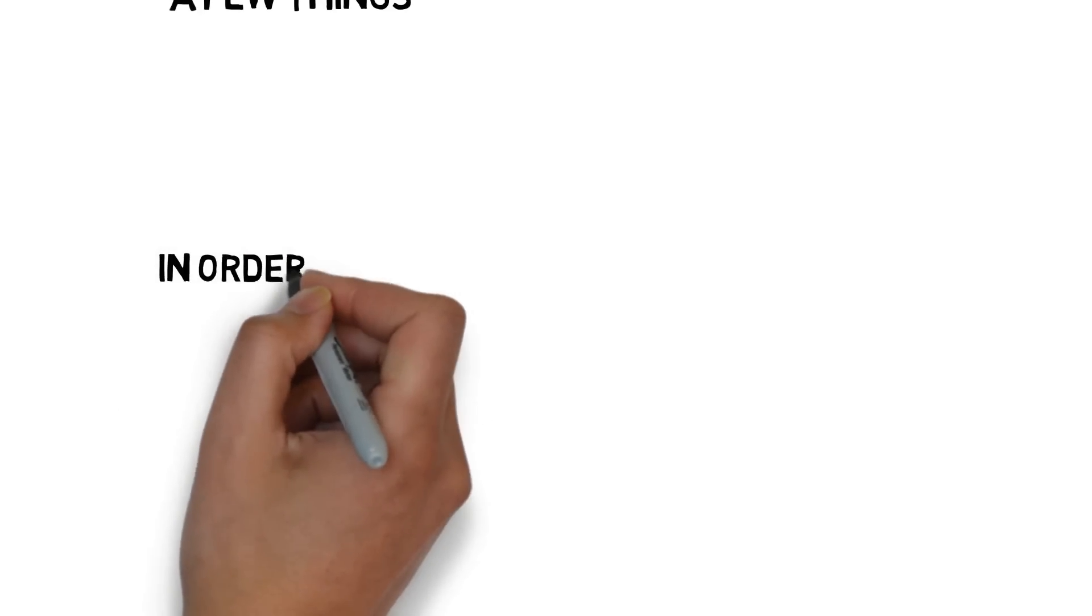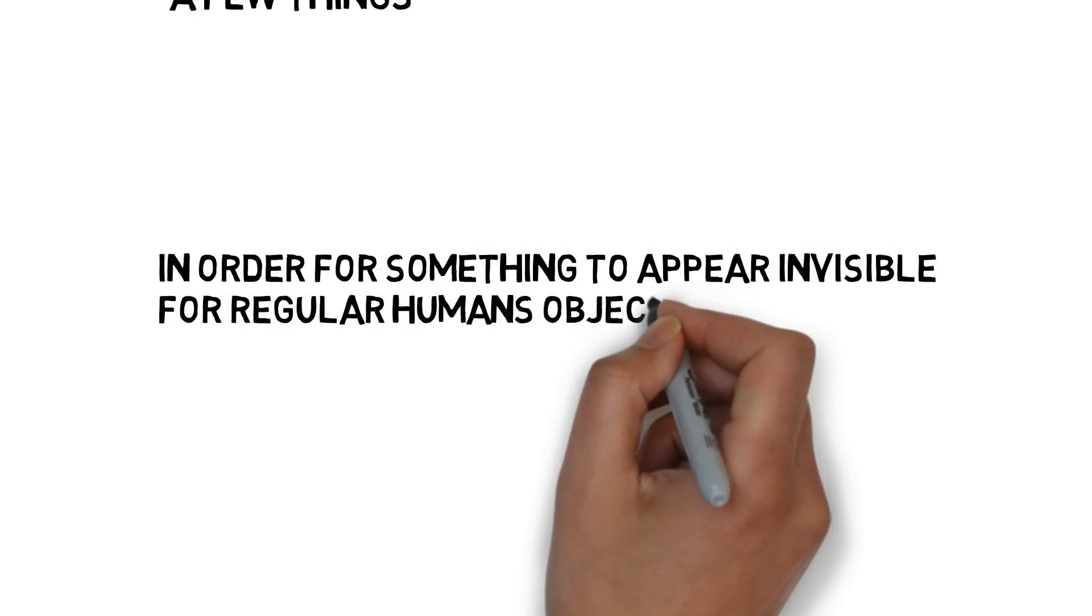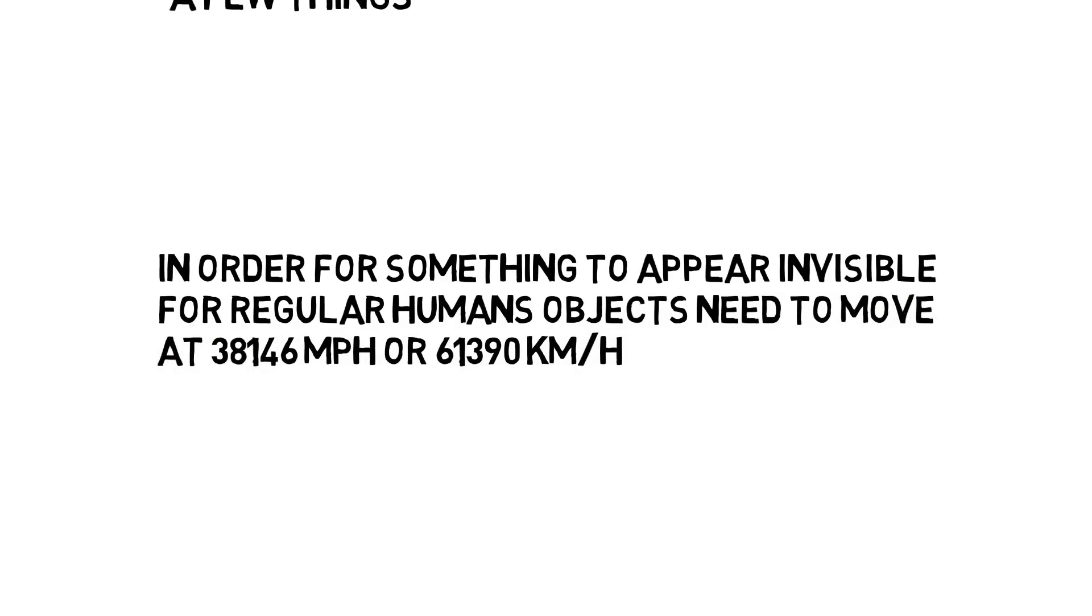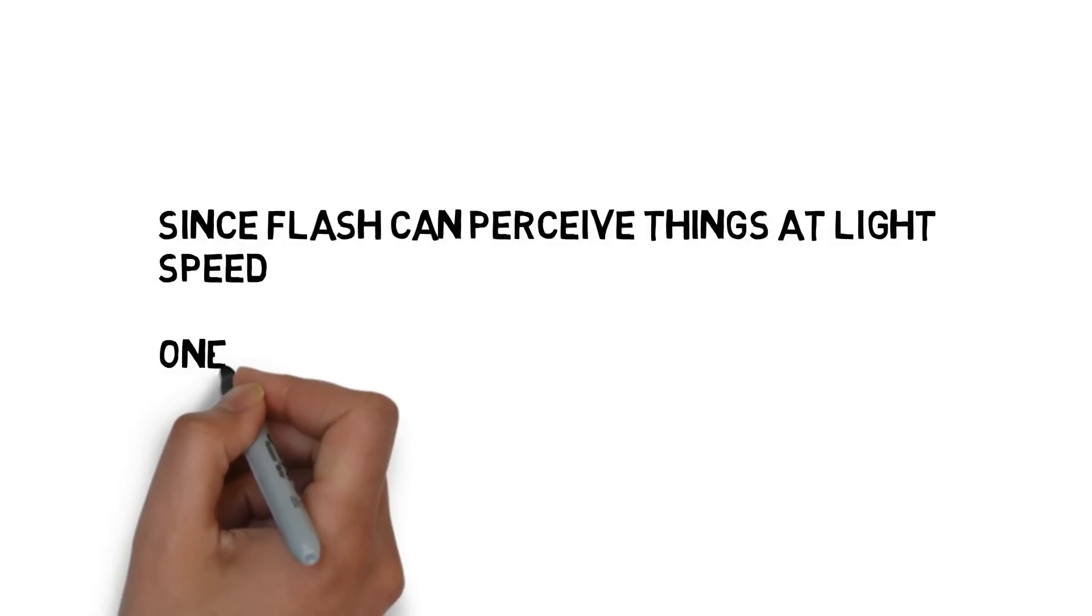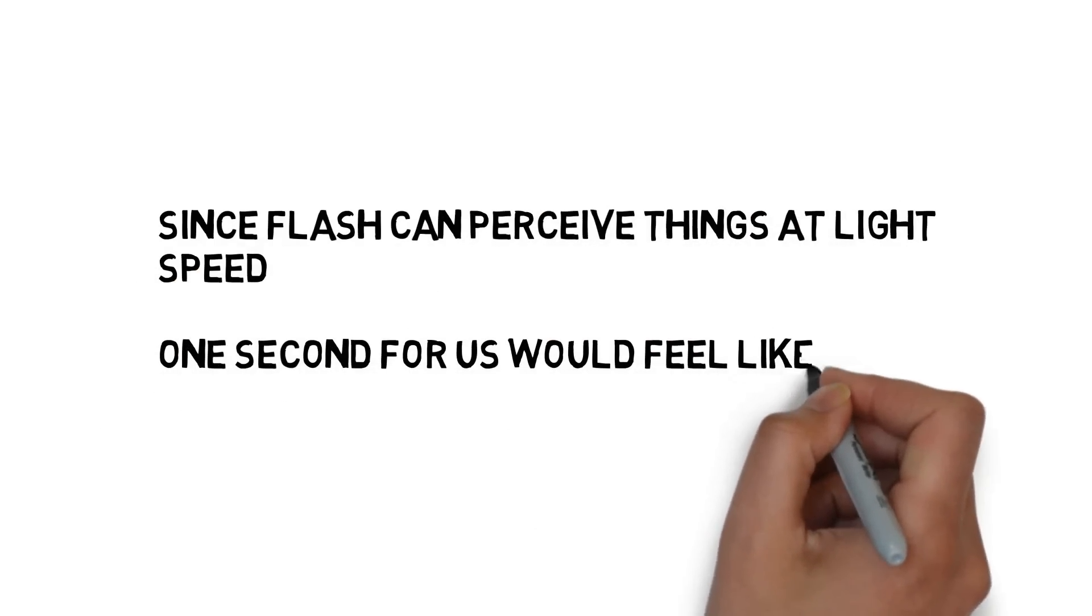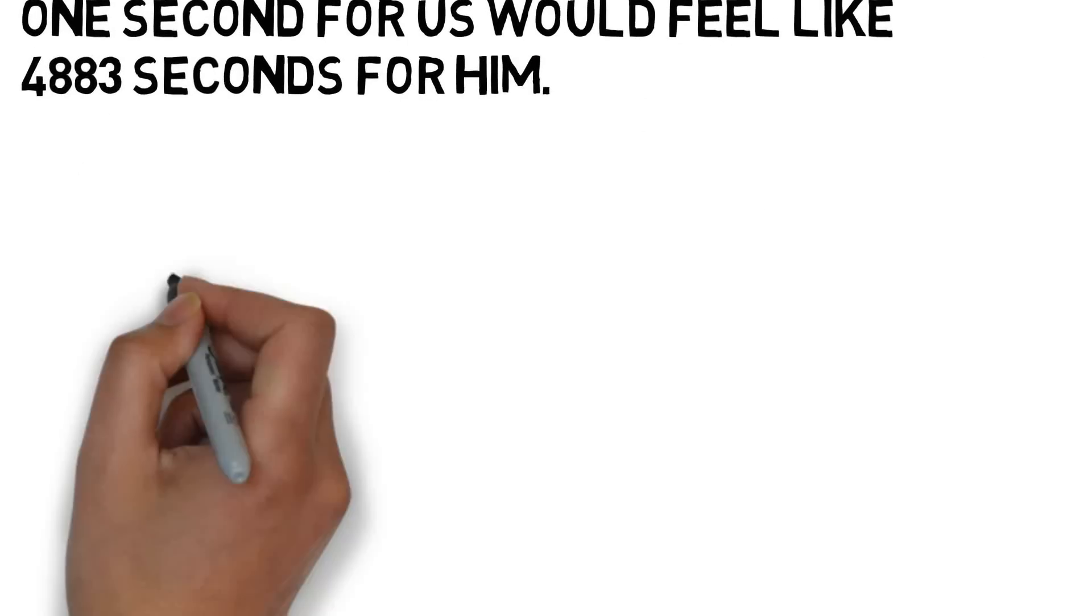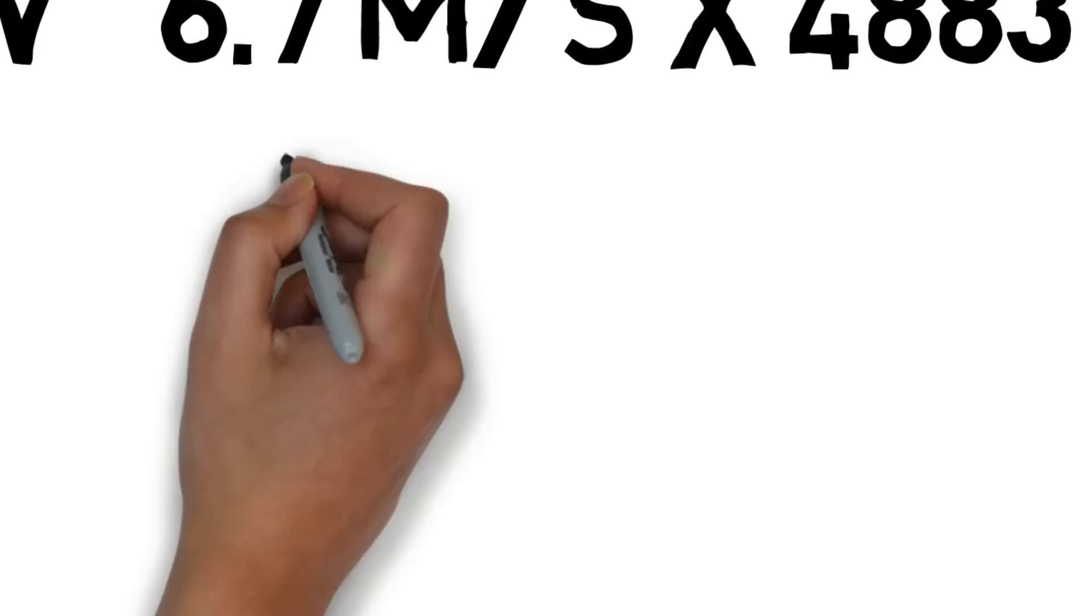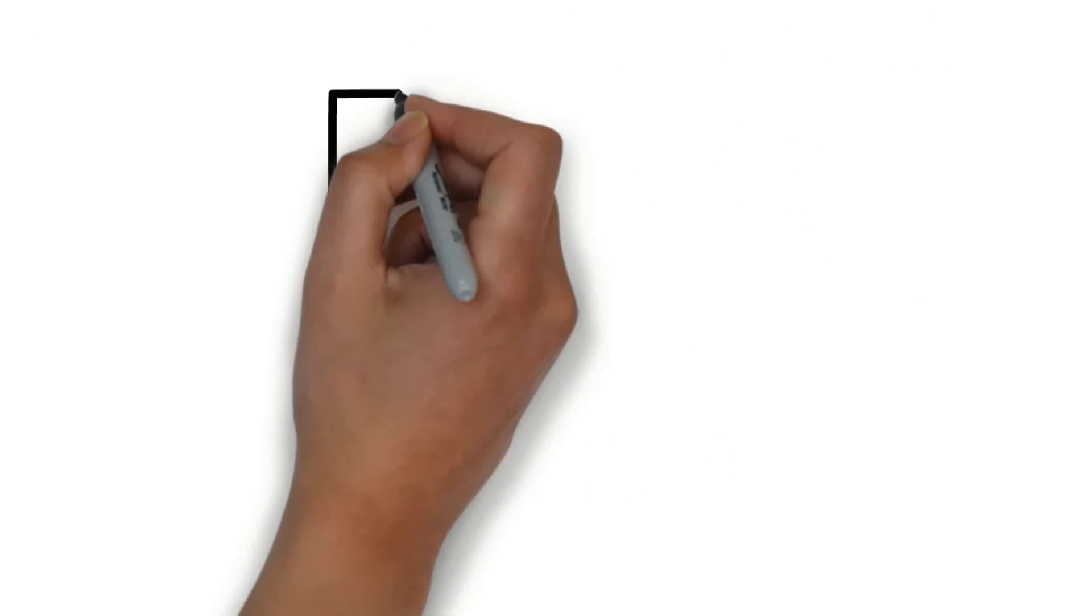In order for something to appear invisible to the human eye, objects need to move at speeds of up to 38,146 miles per hour. Since we're assuming that the flash can perceive things at light speed, one second for us would feel like 4883 seconds for him. Applying that value to the speedster equation, velocity equals 6.7 meters per second times the time over 1, we can get that the flash can run at Mach 95. Or he could just run at the speed of light and I did all this math for nothing.